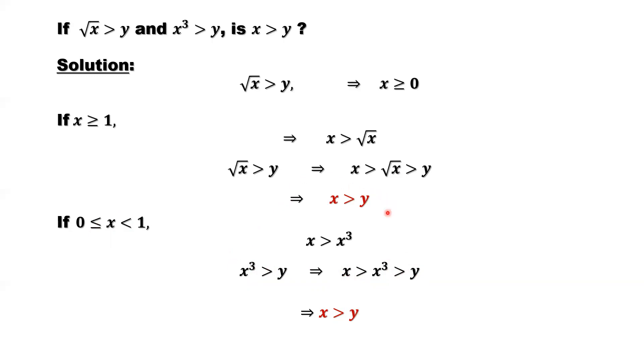For the first situation, we have done this. For the second situation, we have the same result. Combining both, x greater than y for both situations. That means for all situations, for all x values, x is greater than y. This is the conclusion.